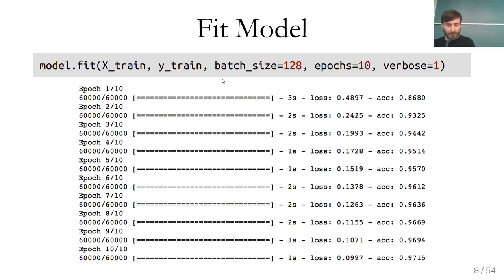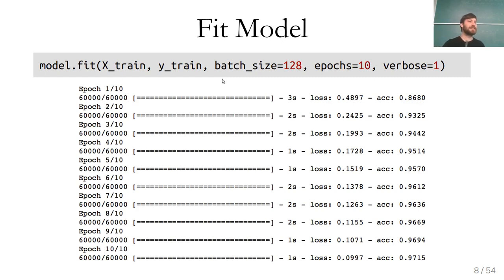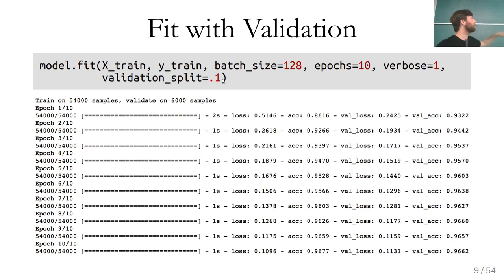Regarding shuffling between epochs: the default is not to shuffle, and it doesn't help much while making training slower. The most common approach is to just iterate over the training set in the same order repeatedly. We'll use enough other tricks later that the order doesn't matter much.